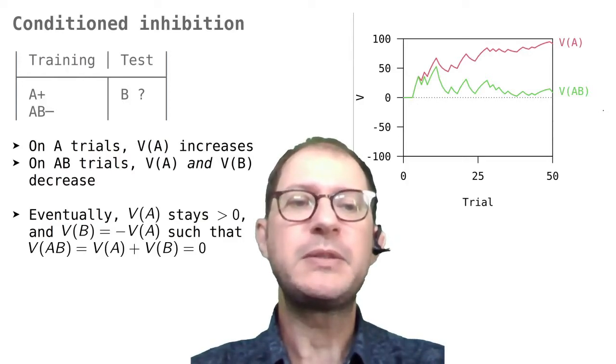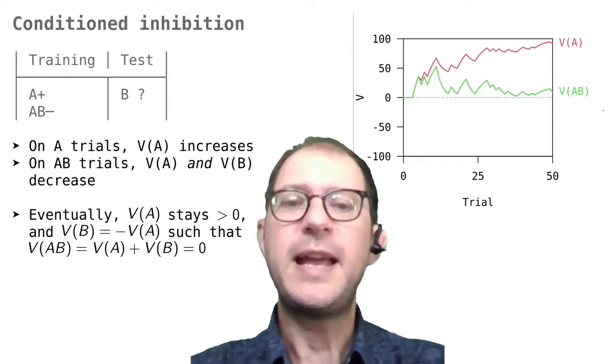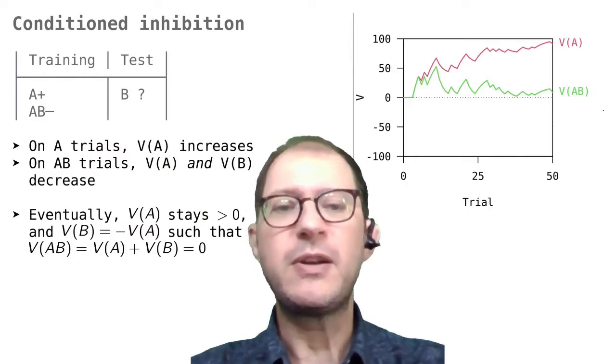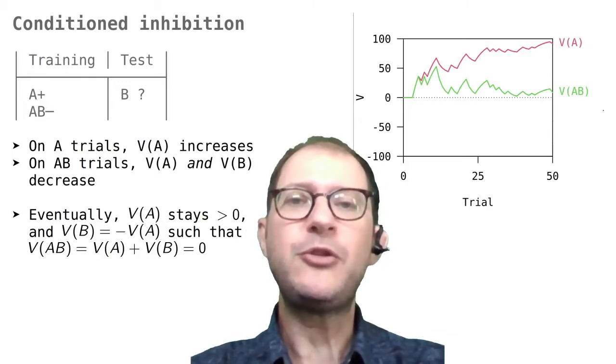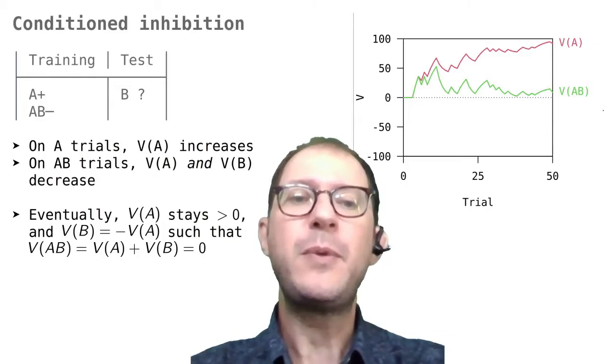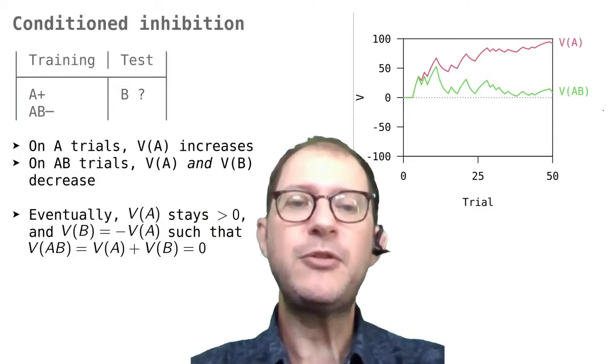So in overshadowing, we had experiences with A and B together, and in blocking, first with A only, and then with A and B only. This means that all changes in associated strength went in the same direction. In conditioned inhibition, on the other hand, we are mixing rewarded experiences with A and unrewarded experiences with B.